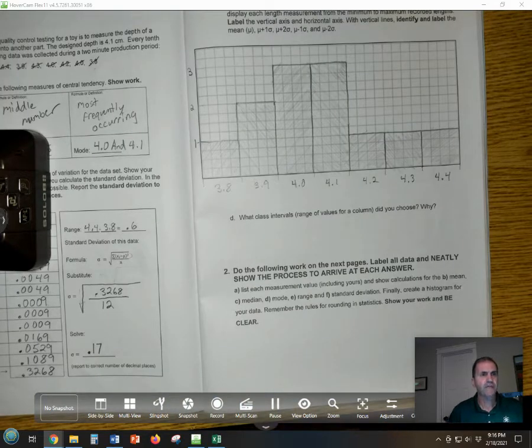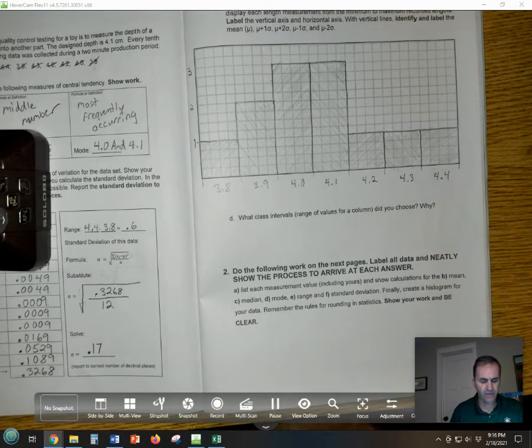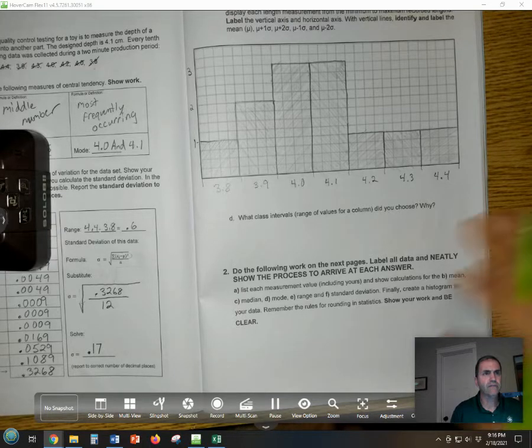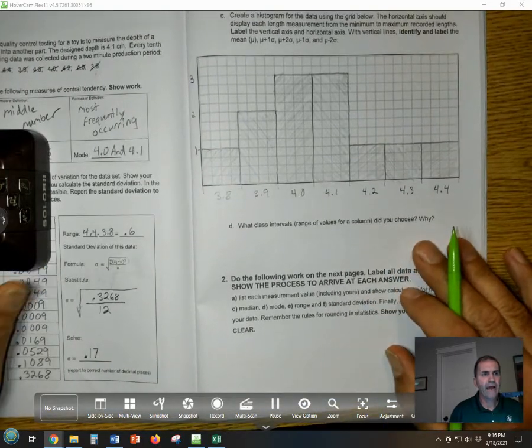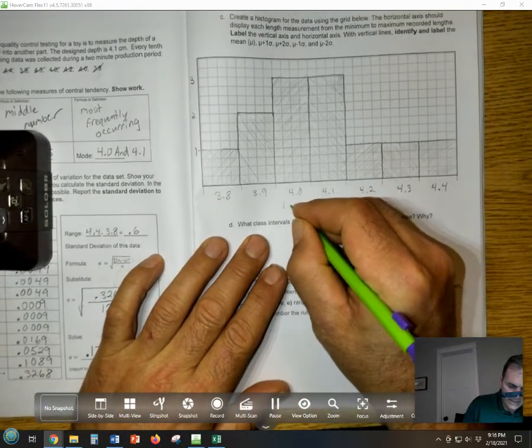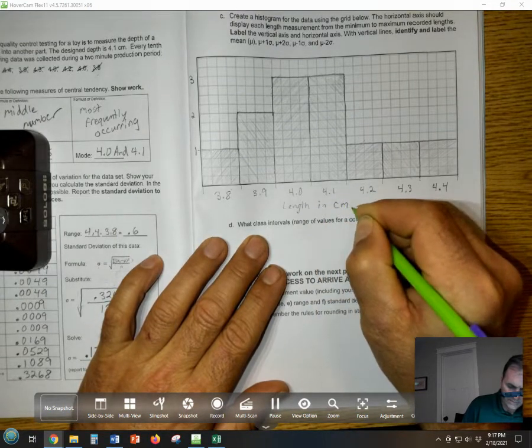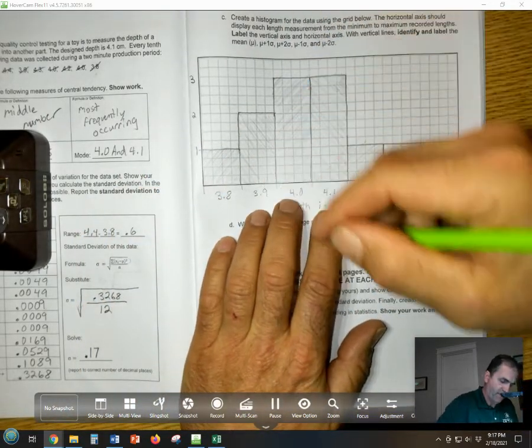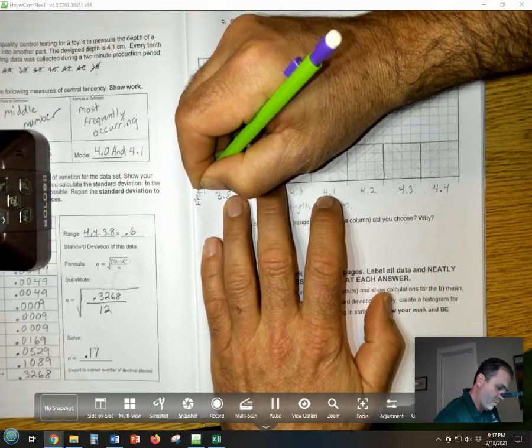Just because I felt like it, I went ahead and hatched it. You can color it, you can make this look however you want to make it look. Next it's asking us to label our axes, so let's go ahead and do this. This is length in centimeters that we measured. Let's call this frequency.